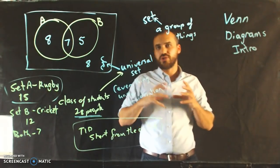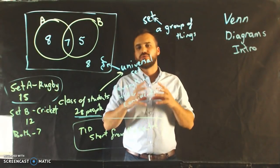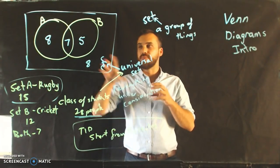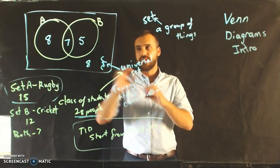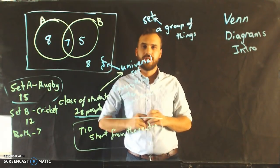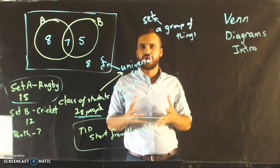So that's Venn diagrams. It's just a really nice way to represent sets of things. Sets of things that may or may not overlap. You can see that overlapping here with that circle. We're going to use these in some future videos.